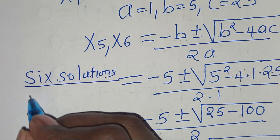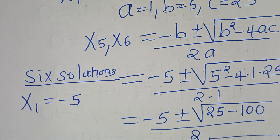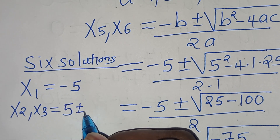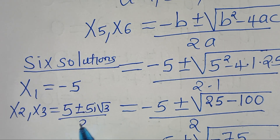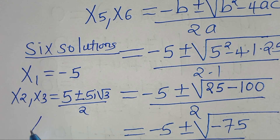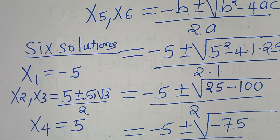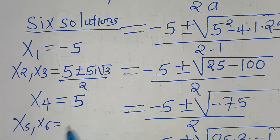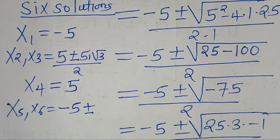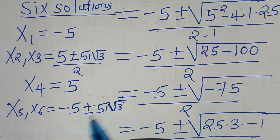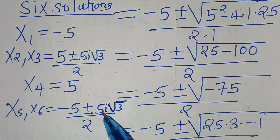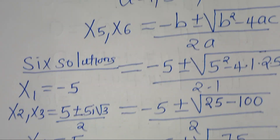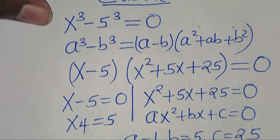In summary: x1 equals minus 5; x2 and x3 equal 5 plus or minus 5i root 3, divided by 2 — two complex solutions; x4 equals positive 5, a real solution; x5 and x6 equal minus 5 plus or minus 5i root 3, divided by 2 — two more complex solutions. This totals six solutions: four complex and two real. Please like this video and subscribe, see you in the next video.